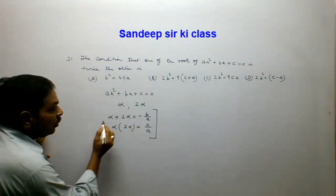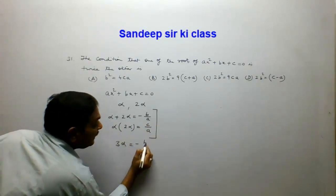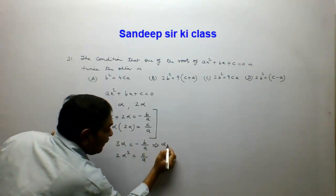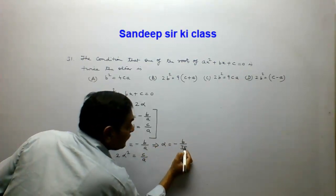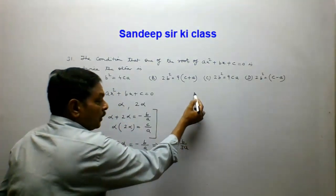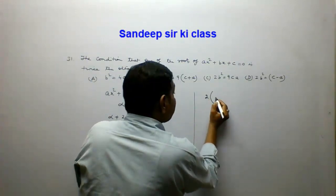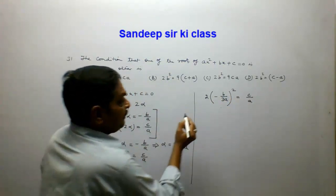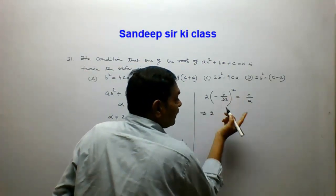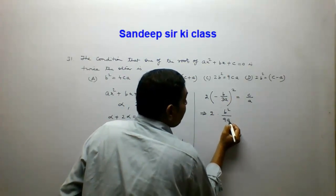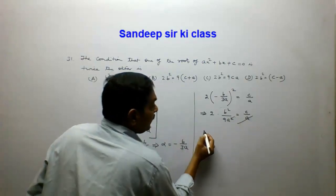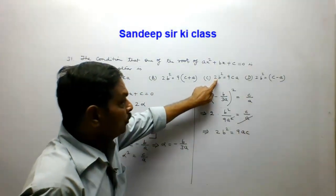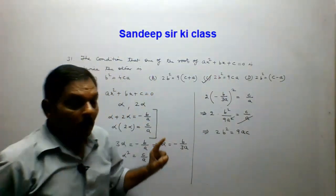We eliminate alpha from the two equations. From the sum: 3·alpha equals minus b over a, so alpha equals minus b over 3a. Substituting into the product equation: 2·(minus b over 3a) squared equals c over a. Simplifying: 2·b squared over 9·a squared equals c over a, and cross-multiplying gives 2b squared equals 9ac. So option C is the correct answer.